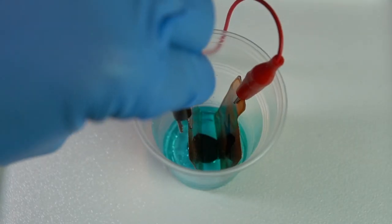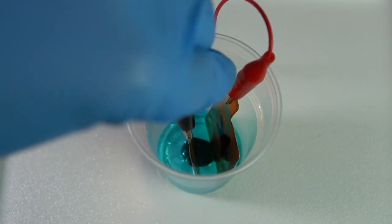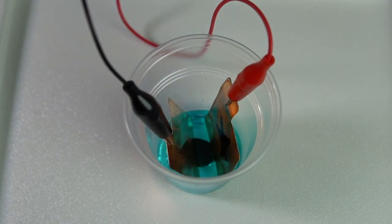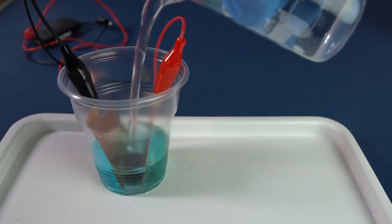Fix the two plates to the playdough so they do not touch each other. Then fill water to the cup, but ensure that the crocodile clips are not wet.